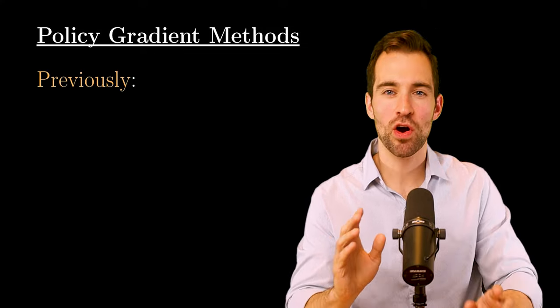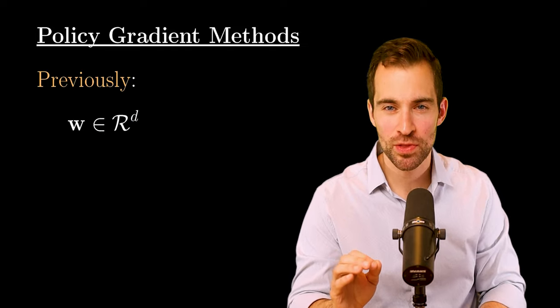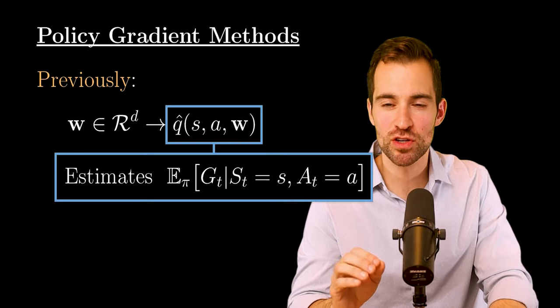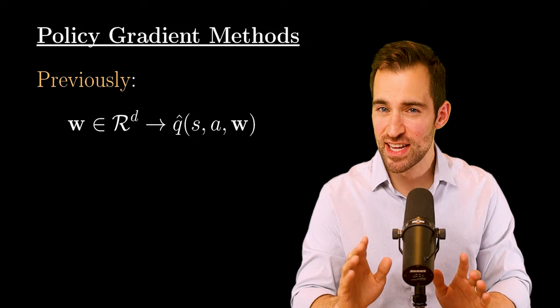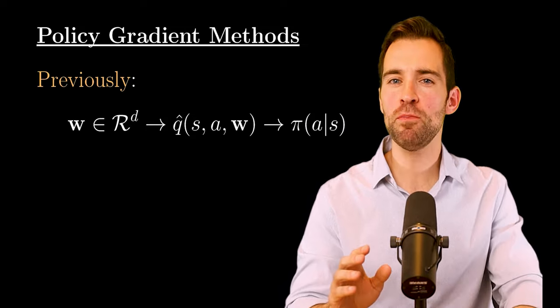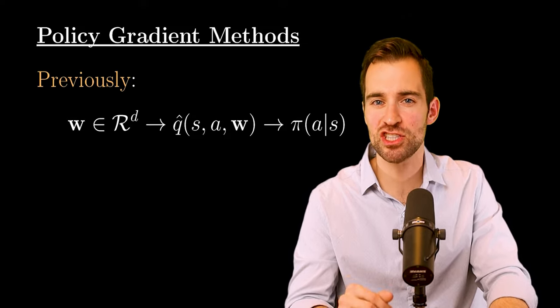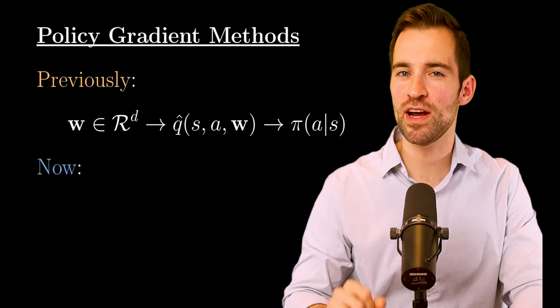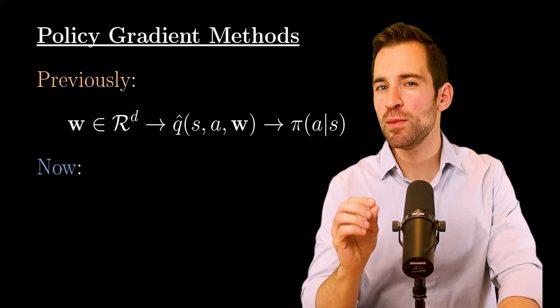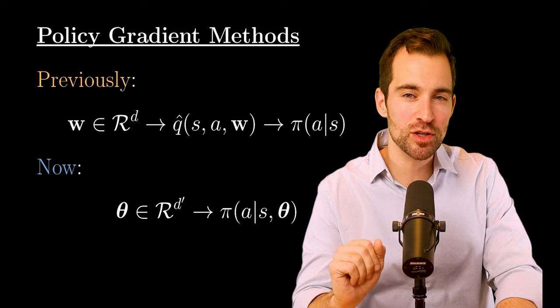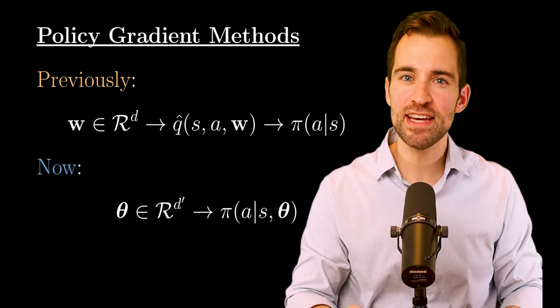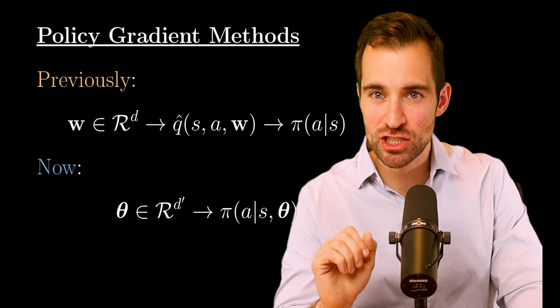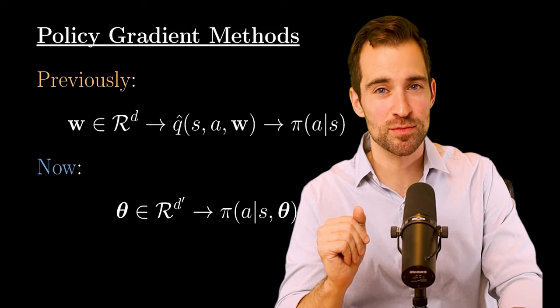Now, in the previous video, our goal was to select a parameter vector w, which we would plug into some function q hat, such that it estimates the expected return of taking action a in state s. This is then used to determine a policy. In what we've seen, that policy would select the highest value action, while occasionally selecting an action at random for the sake of exploration. But now, with policy gradient methods, we're going to go completely around these value estimates. Our goal will be to select a parameter vector theta, which directly determines our policy. So, selecting a theta doesn't tell you any expected returns. Instead, it directly specifies the probability of every action in every state. And, as we'll see, this comes with some nice properties.